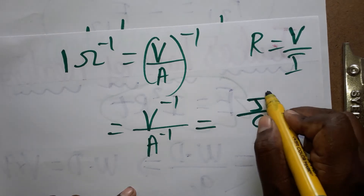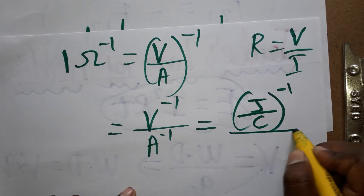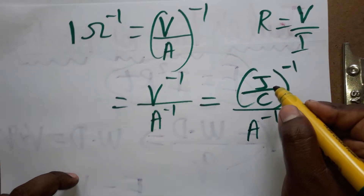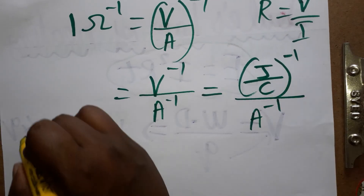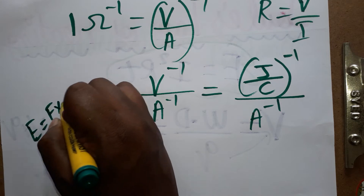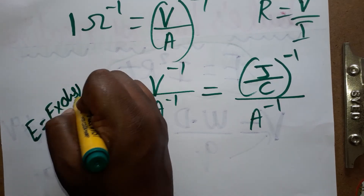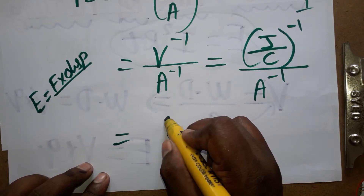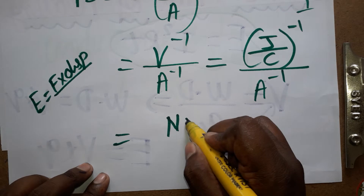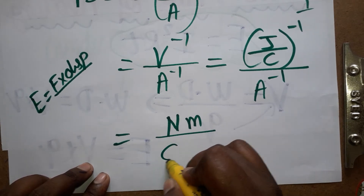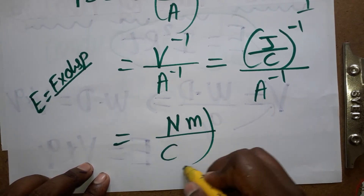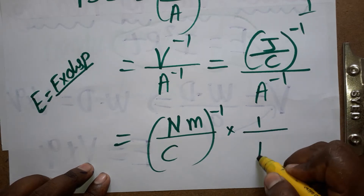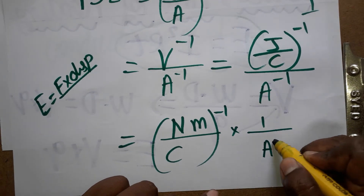Voltage can be taken as joule per coulomb. So we have joule per coulomb, all inverse, times 1 divided by ampere inverse. Now, joule is an energy unit — energy is equal to force into displacement, so joule equals newton meter. Therefore joule is newton meter divided by coulombs, all inverse, into 1 divided by ampere inverse.